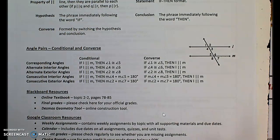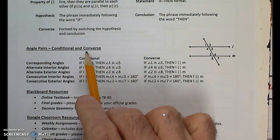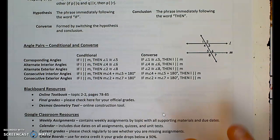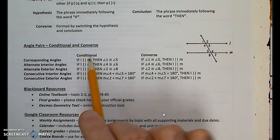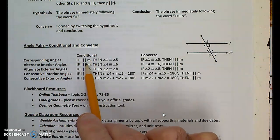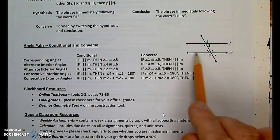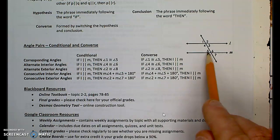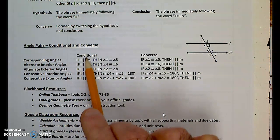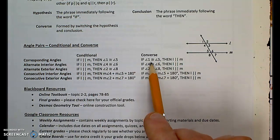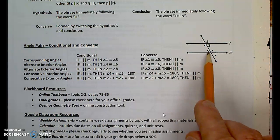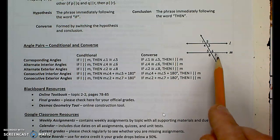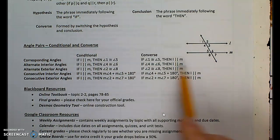We're going to use angle pairs with the conditional and its converse. Previously, using the conditional for corresponding angles, we said: if lines L and M are parallel, then angles 1 and 5 are congruent. That started with the assumption that lines were parallel. Now we work backwards — the converse. If we measure those two angles and they're congruent, if angle 1 and angle 5 are congruent, then we can conclude the lines are parallel. That's what we're doing in this packet: working the other way around with the converse.